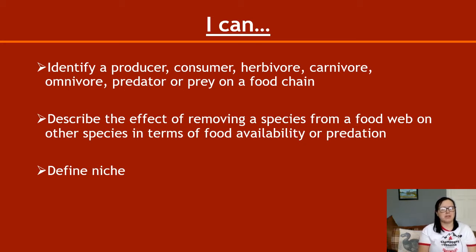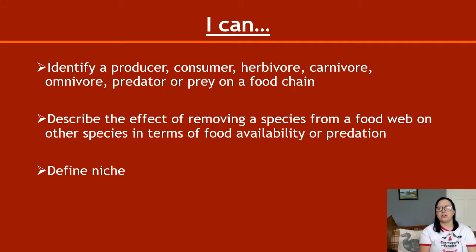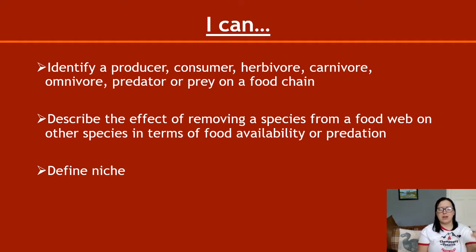You need to get some exam questions and practice describing the effect of when you take away a species from a food web — what happens to the other species in terms of food availability or predation? A species will increase or decrease if it has more or less food, and increase or decrease if it has less or more predation.